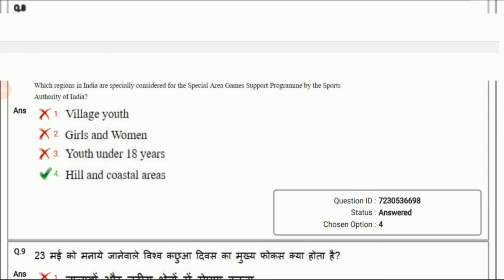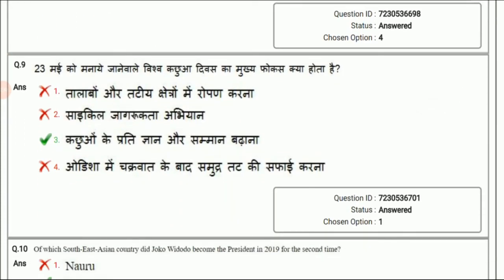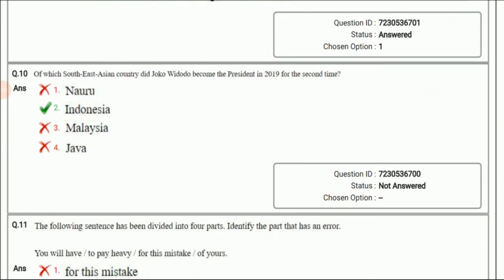Next question: Which regions in India are specially considered for the special area game support program by the Sports Authority of India? The answer is hill and coastal areas. Next question: What is the purpose of celebrating World Turtle Day on 23rd May? The answer is it is celebrated every year on 23rd May to bring attention to, increase knowledge of, and respect for turtles. Option 3 is the correct answer. Next question: Of which South East Asian country did Joko Widodo become president in 2019 for the second time? The answer is Indonesia.